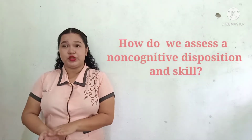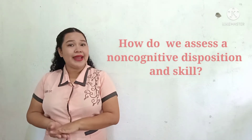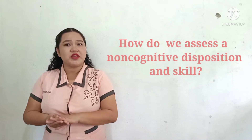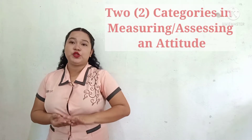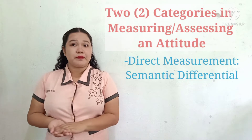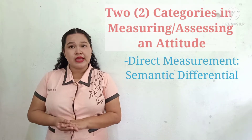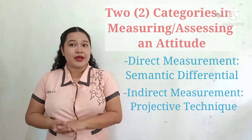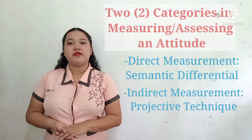So now we will go to the examples that would assess attitude. How does one assess a non-cognitive disposition and scale? We could learn about people's attitude by simply asking them, but that's not always the case. How people feel about themselves is strongly linked to their social acceptance. The measuring of attitude is usually broken down into two categories: a process called direct measurement, where semantic differential is used, and an indirect process called indirect measurement, using projective techniques.